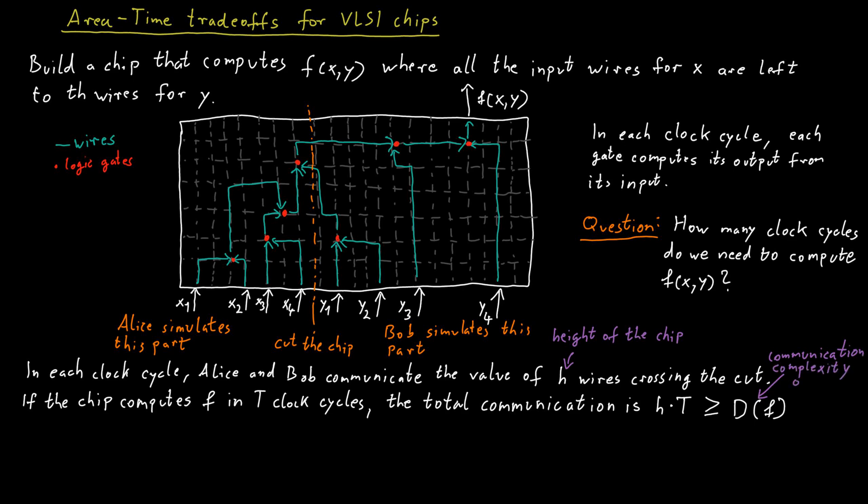And this gives us a tradeoff between the size of the chip and the number of clock cycles required to compute certain functions. For example, if you have a chip that has height square root n, then it requires at least square root n clock cycles to compute a function like the equality function or the disjointness function.